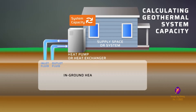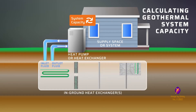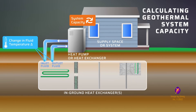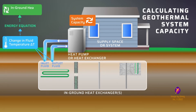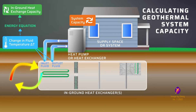This system is connected to the ground using a loop of fluid that branches off into a network of in-ground heat exchangers. There are a growing number of styles of in-ground heat exchangers, and the trends we are talking about here apply to all of them. One of the most important variables in a geothermal system is the change in fluid temperature value. This value can be used with the energy equation to calculate the in-ground heat exchange capacity, which is the amount of heating or cooling the ground is supplying to the fluid entering and exiting the ground loops.